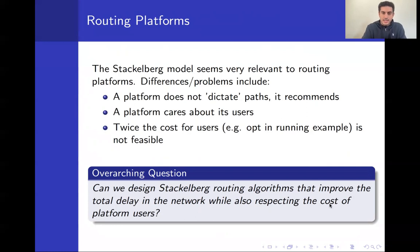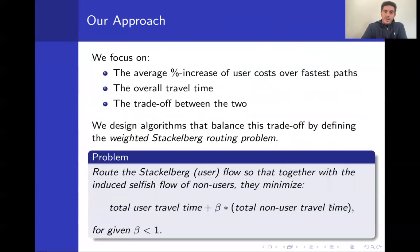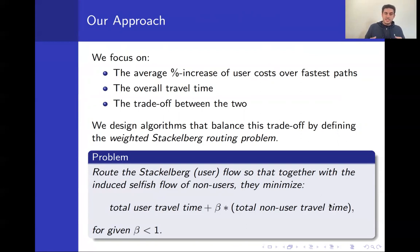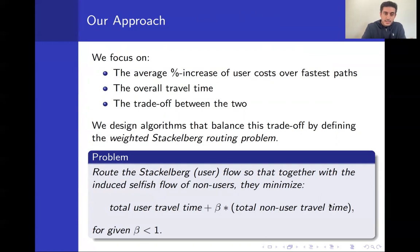The overarching question we study is: can we design Stackelberg routing algorithms that improve total delay while also respecting the cost of platform users? Our approach focuses on two quantities and their trade-off: the average percentage increase of user costs over fastest paths, and the overall travel time. We define a variant called the Weighted Stackelberg Routing Problem, where we minimize the total user travel time plus beta times the total non-user travel time, with beta less than one, discounting non-user costs to bring user experience closer to fastest paths.